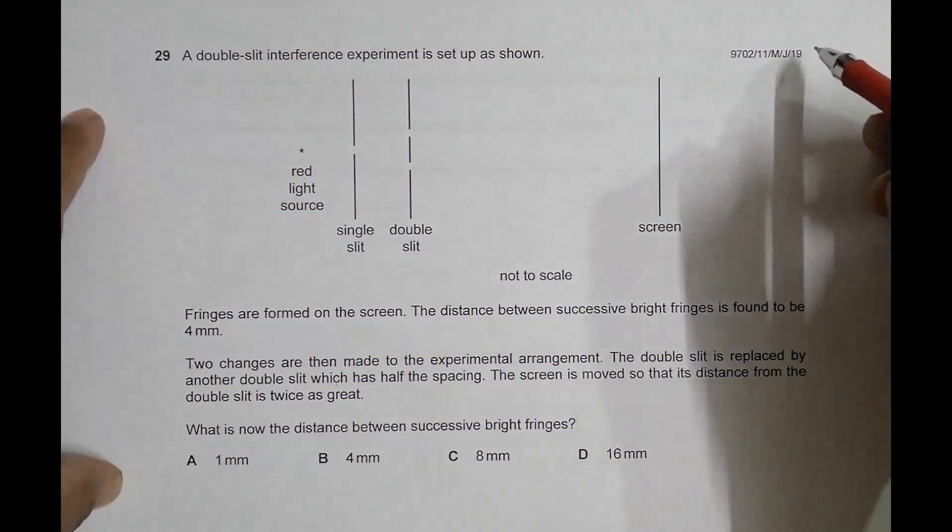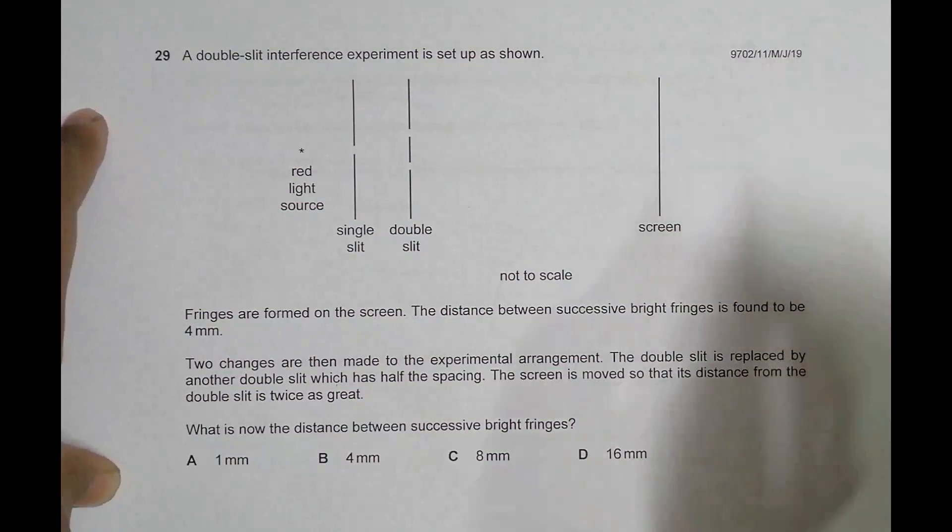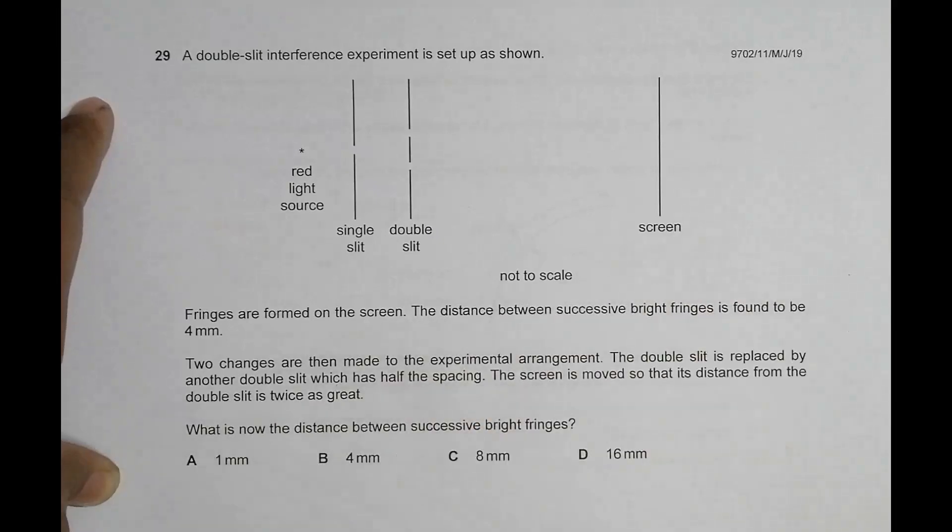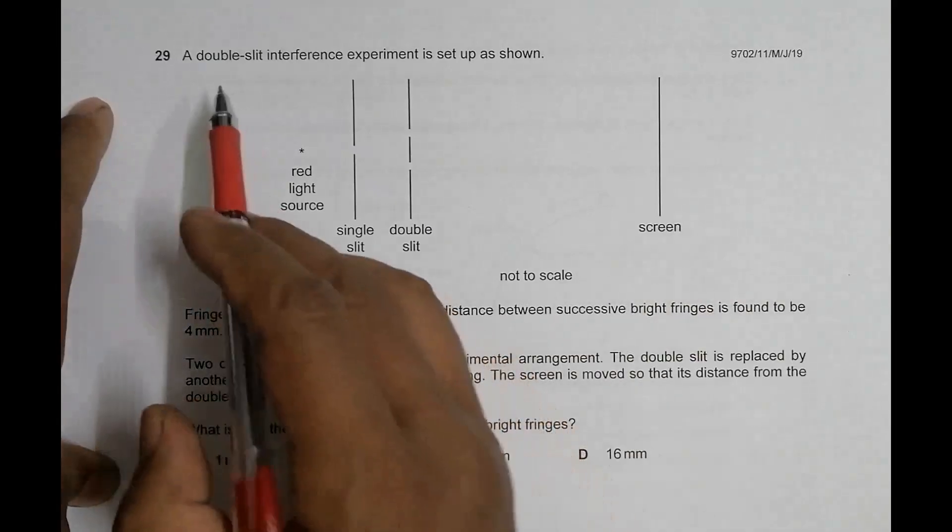Hello folks, this is a 2019 May-June Paper 1, question number 29. This question is concerned with the chapter of superposition and the subtopic is interference of waves.